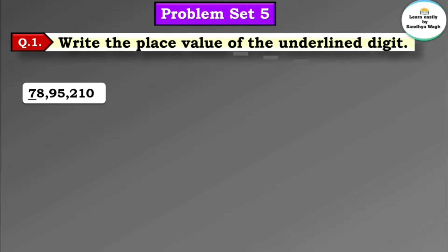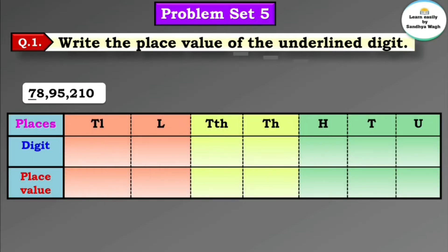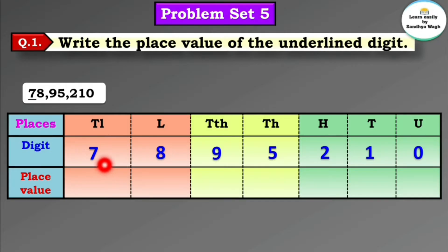Let's arrange this number according to their places. 7 is in the 10 lakhs place, 8 is in the lakhs place, 9 is in the 10 thousands place, 5 is in the thousands place, 2 is in the hundreds place, 1 is in the tens place, and 0 is in the units place. 7 is in the 10 lakhs place, so 7 multiplied by 10 lakh is equal to 70 lakh.